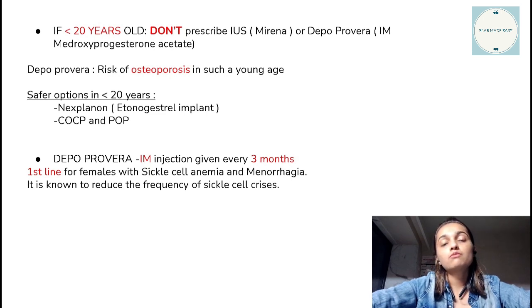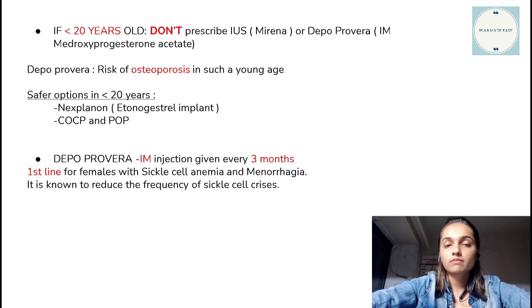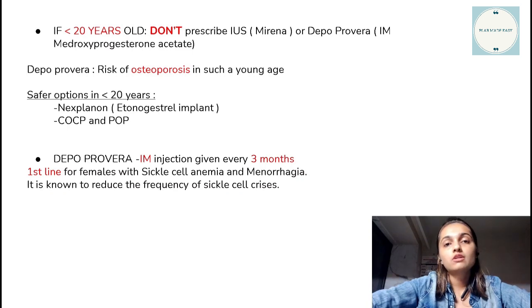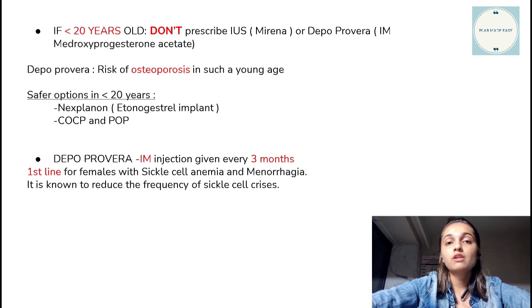When it comes to females who are less than 20 years old, the contraceptives of choice could be Nexplanon — which is the etonogestrel implant — or the combined oral contraceptive pill, or the progesterone-only pill.